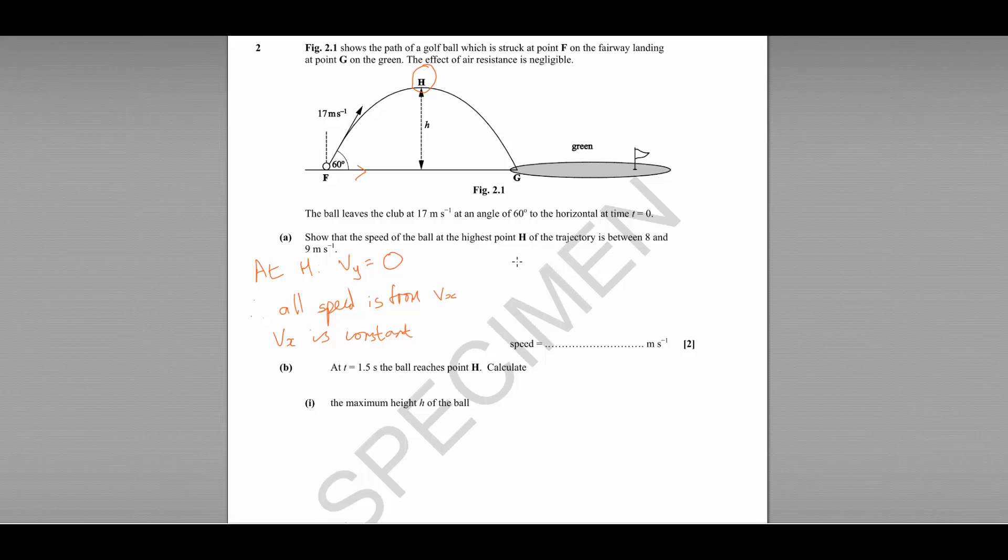In this case, it would be 17 cos 60 degrees, which gives us 8.5 metres per second. We can check the answer because it's a show that question is between 8 and 9 metres per second. Well, 8.5 is perfect.